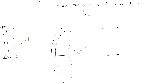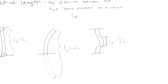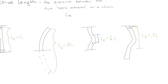If you're fixed at both top and bottom, the column bends in an S-shape, and the two zero-moment points are at the quarter points, so the effective length is one-half L. For a column that's pinned on one end and fixed on the other, you'd have to do the math, but the effective length comes out to about 0.7 times the length.